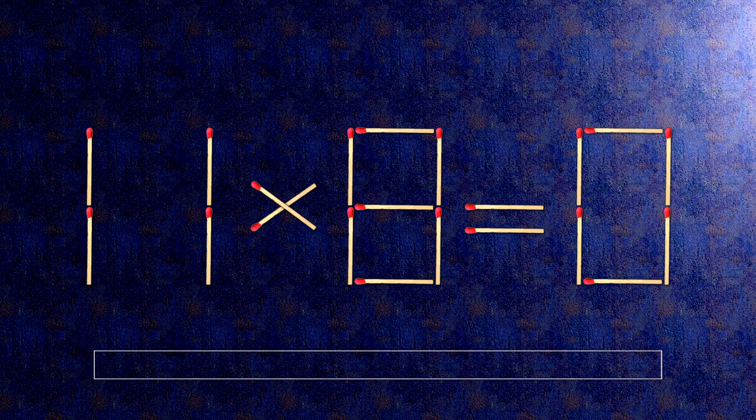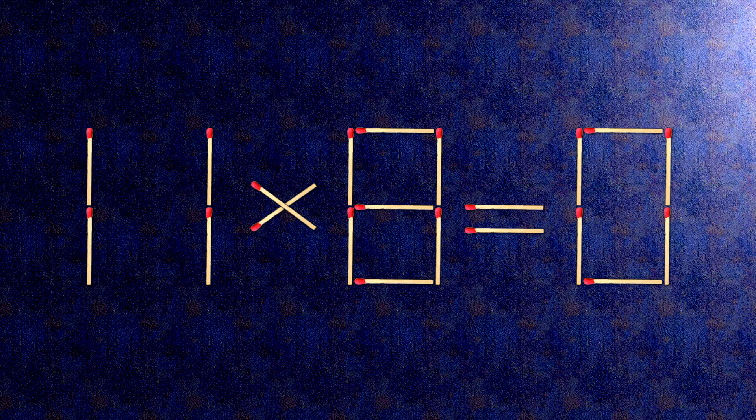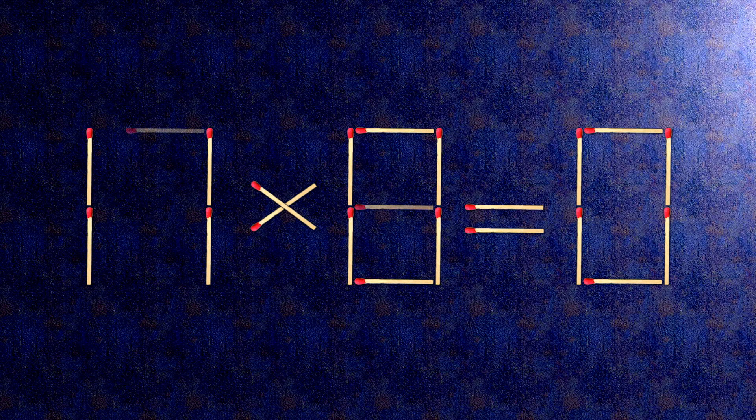How this puzzle is solved: all we need to do is move this match right here. When we check the condition, 17 times 0 is 0. The task is done and the puzzle is solved.